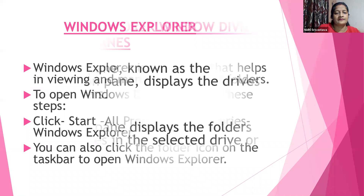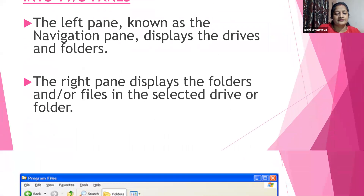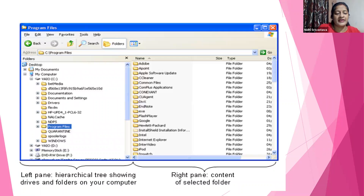The Windows Explorer window is divided into two panes. The left pane, known as the navigation pane, displays the drives and folders. The right pane displays the folders and all files in the selected drive or folder. This image shows the left pane — a hierarchical tree showing drives and folders on your computer. The right pane shows the content of the selected folder.